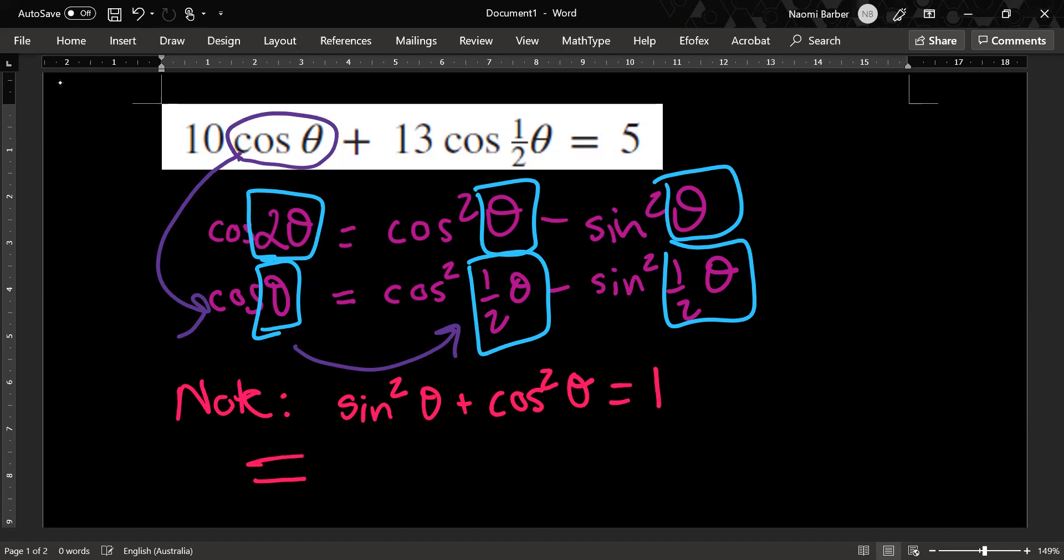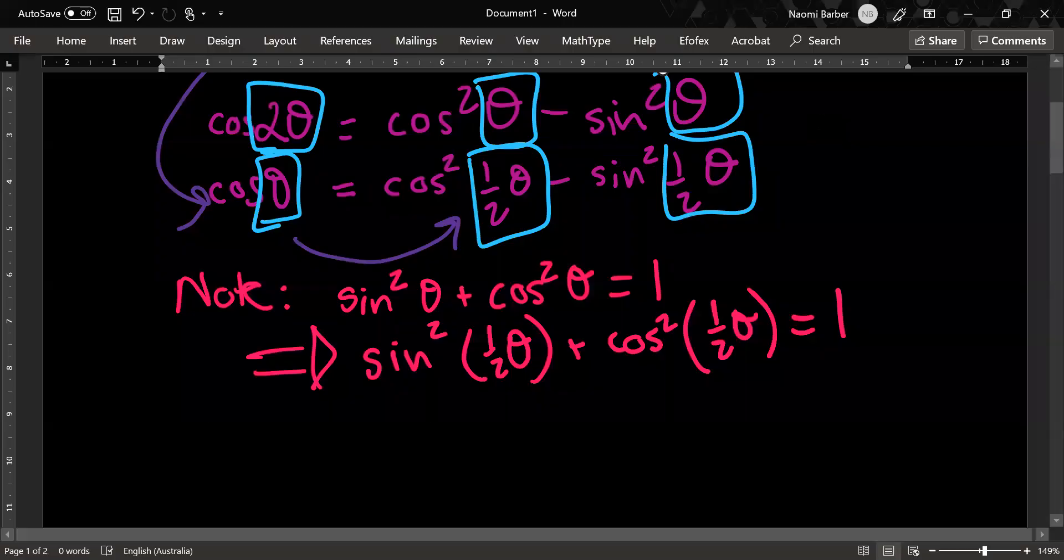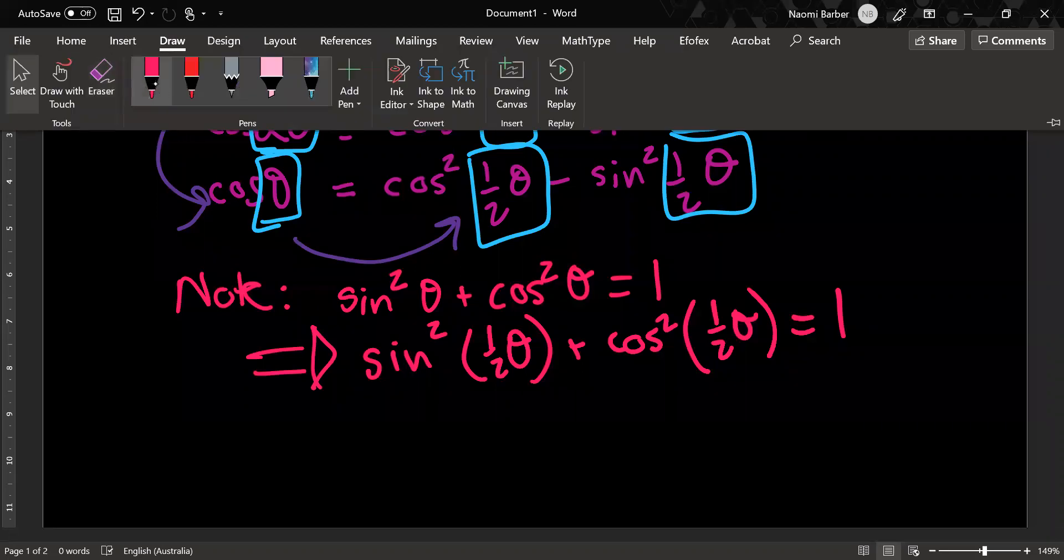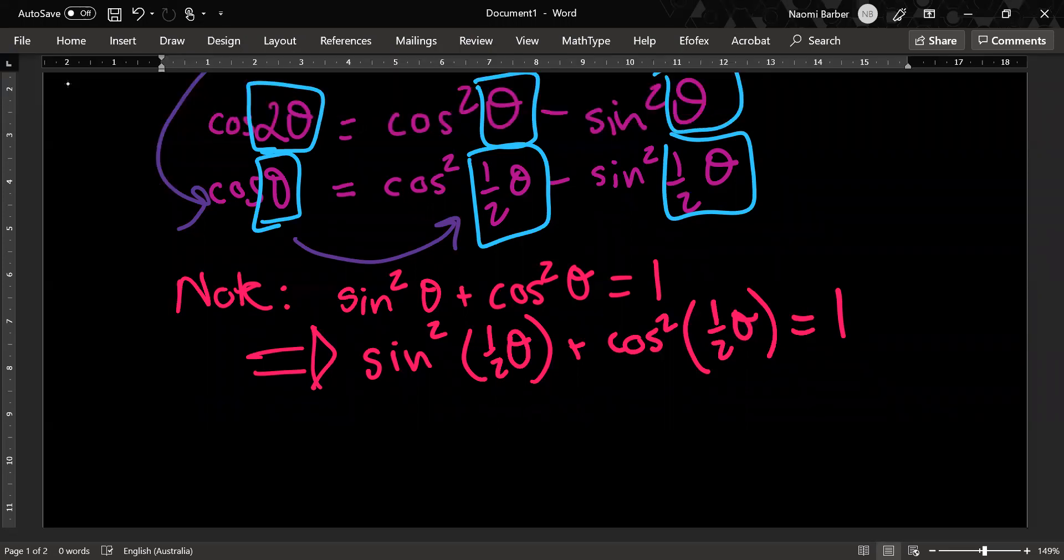It follows from that, that sine squared something plus cos squared something equals one. My something could be anything. So therefore, I can make sine squared half theta equal to one minus cos squared half theta.